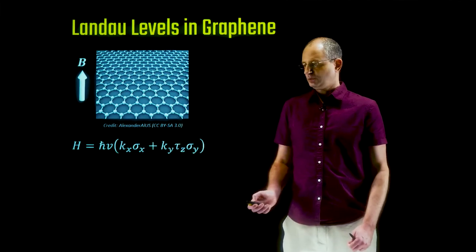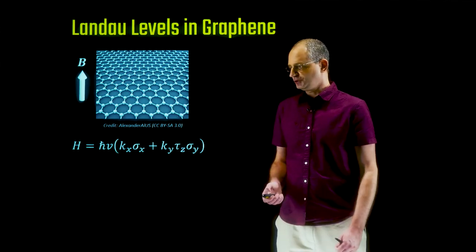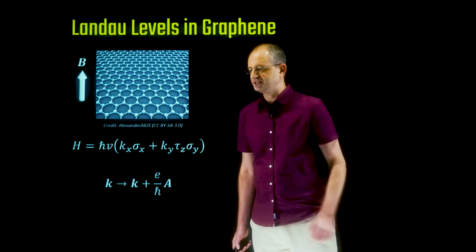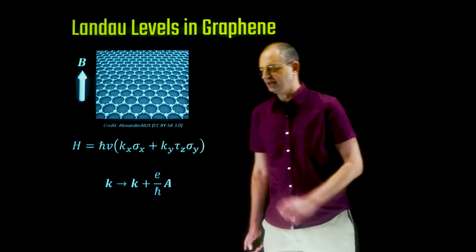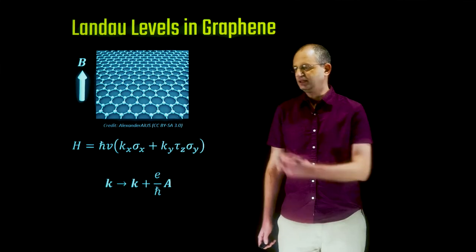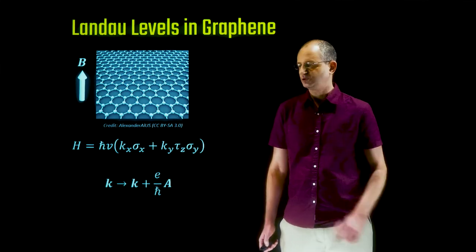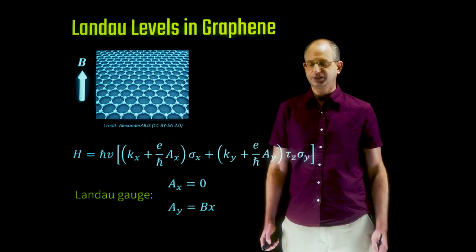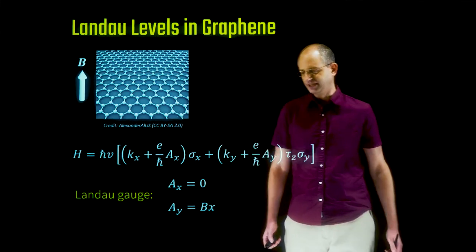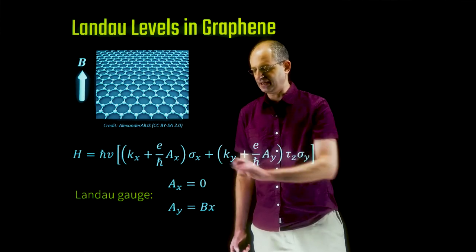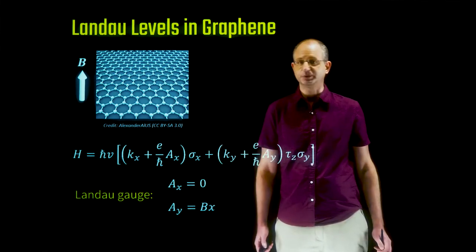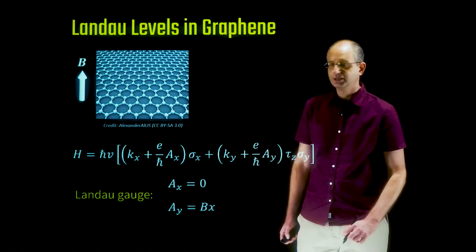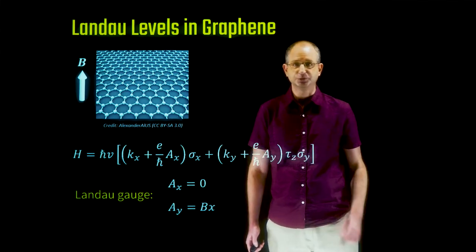We're going to do a minimal substitution, replacing the momentum k by k plus (e/ℏ) times A, the vector potential. To represent a uniform perpendicular magnetic field we use the Landau gauge, where the x-component of the vector potential is zero and the y-component is proportional to the position x times the magnetic field B.